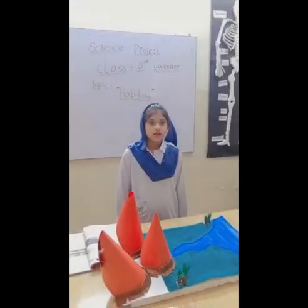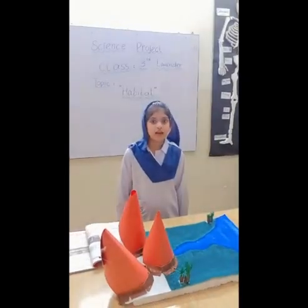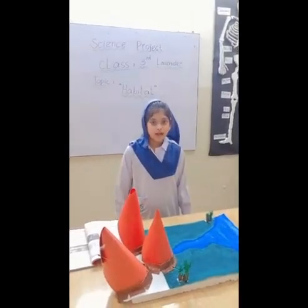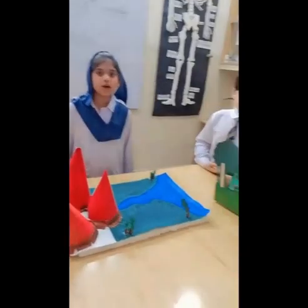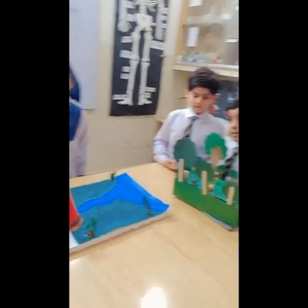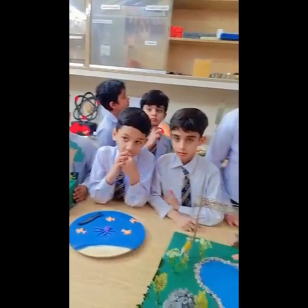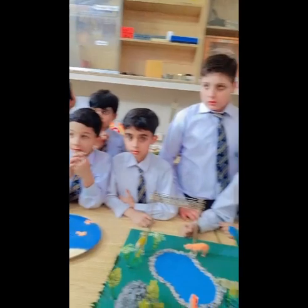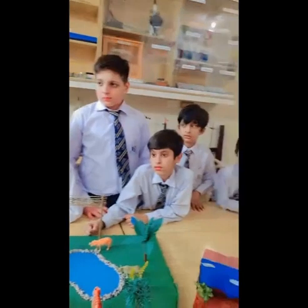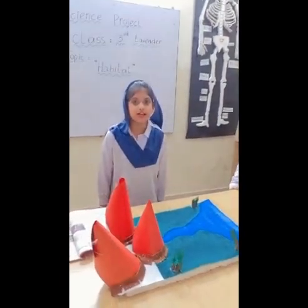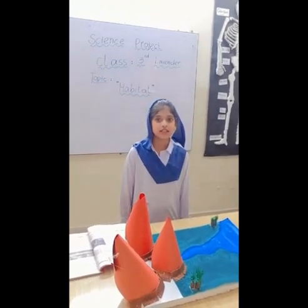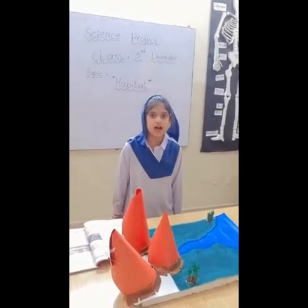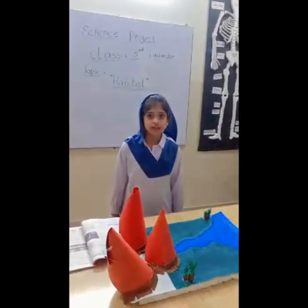There are two types of water habitat: sea water habitat and freshwater habitat. Plants found in sea habitat include sea grasses, kelps, and small trees.